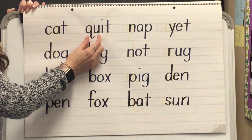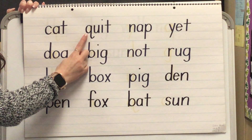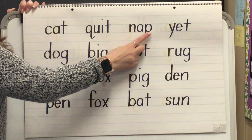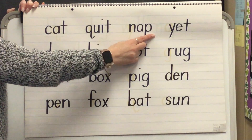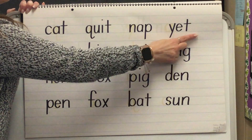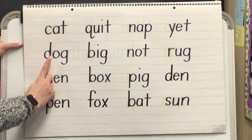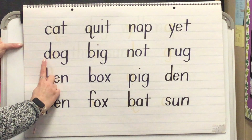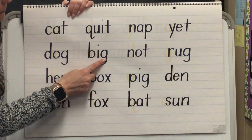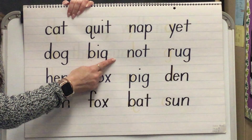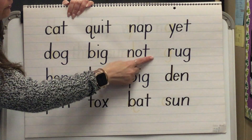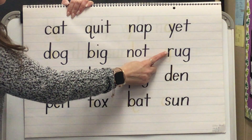Now you're going to blend. Word — yes, quit. Blend. Word — yes, now. Blend. Word — yes, yet. Blend. Word — yes, dog. Blend. Word — yes, big. Blend. Word — yes, not. Blend.